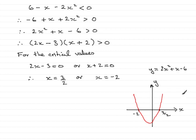Where is y greater than 0? Well, that's where y is above the x-axis. This is on these two branches of the curve here and here. So we'll just mark them in up there and this one down here. And this part of the graph is where x is greater than 3 over 2, and this part of the graph is where x is less than minus 2.